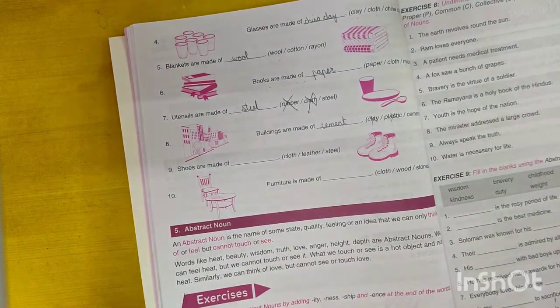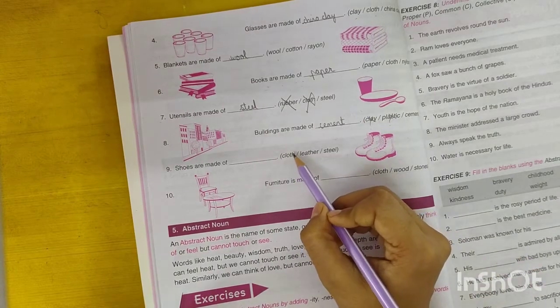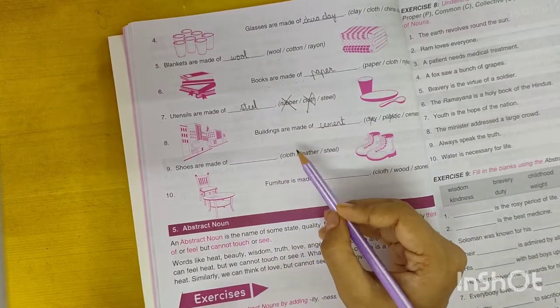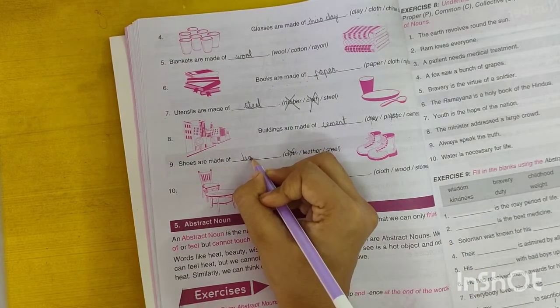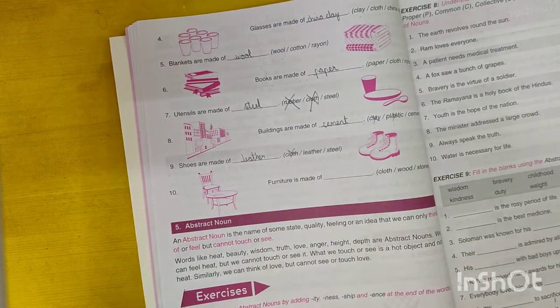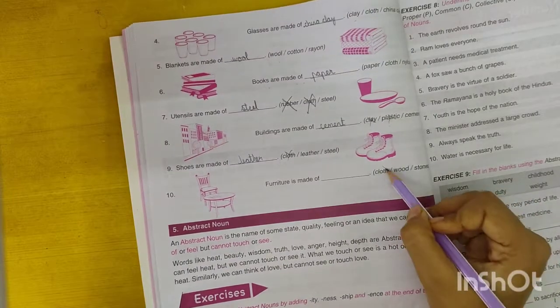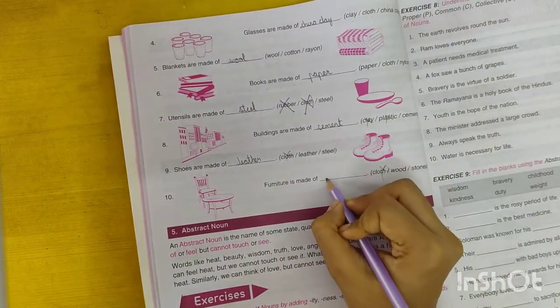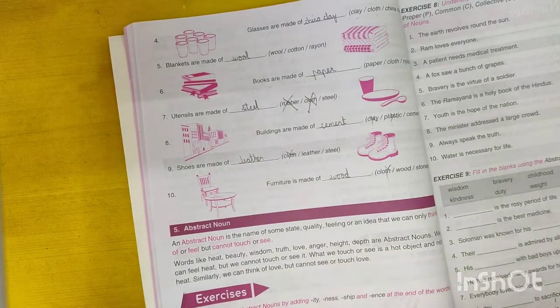Ninth, shoes are made of leather. Tenth, furniture is made of wood. Done.